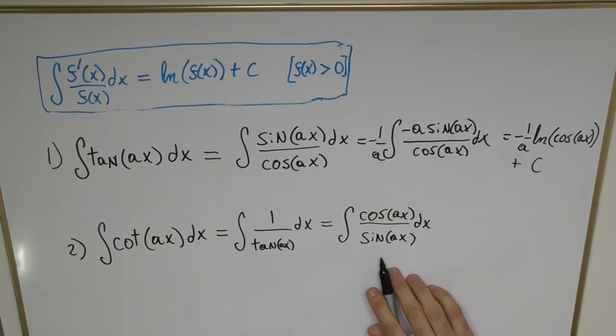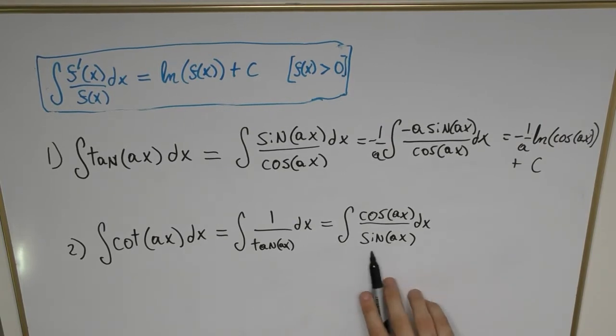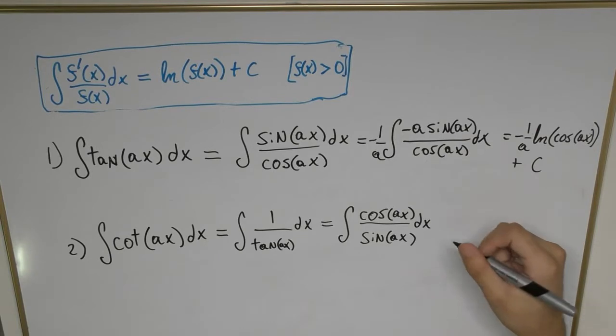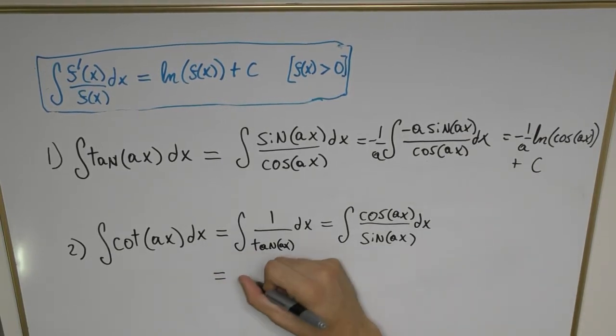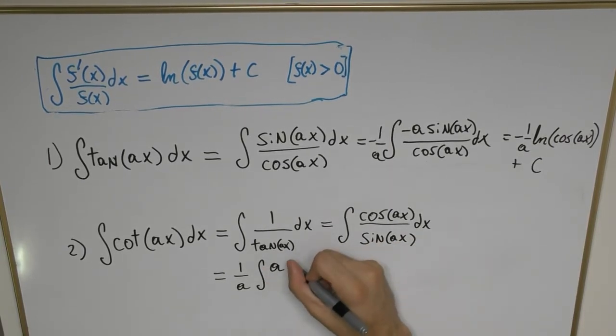The numerator is exactly the derivative of the denominator except for a factor of a. We place 1 over a in front of the integral and put an a in front of cosine.